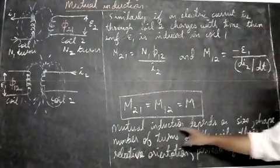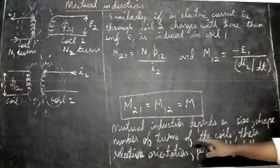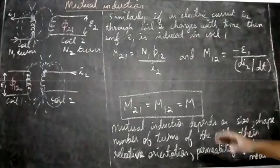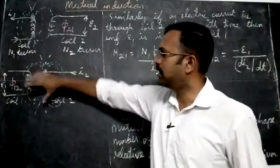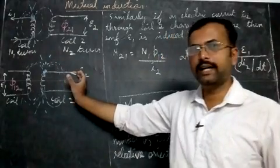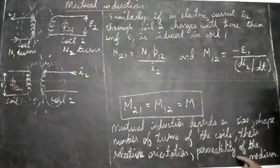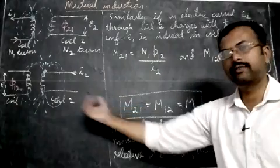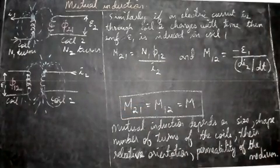Mutual inductance depends on the size and shape of the coils, the number of turns, the relative orientation of the coils — whether they are aligned or at an angle — and the permeability of the medium, which determines how well the medium allows magnetic flux to pass through. These are the factors that mutual inductance depends on. Thank you for watching.